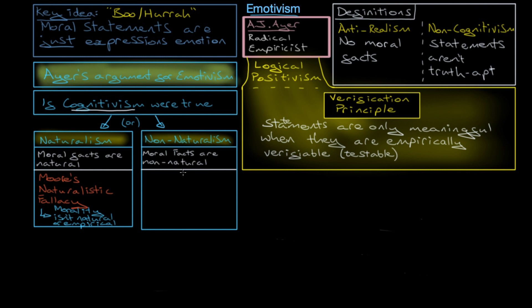if cognitivism and realism were true, it would have to be non-natural. But, of course, if it's non-natural, well then it can't be empirically verified. And if it can't be empirically verified, then it fails the verification principle here.